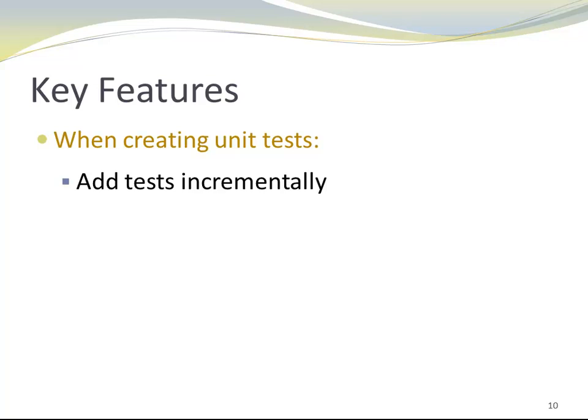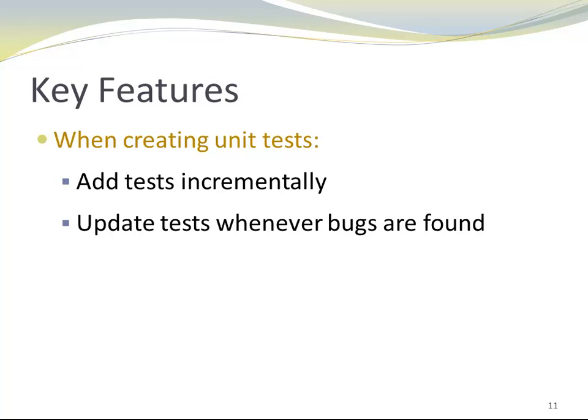Here are some key features of unit tests. When you create unit tests, you add them incrementally — you write some code, you write a test; you write more code, you write more tests. Whenever bugs are found, tests are updated. Sometimes you find a problem in the code and there's a temptation to just go in and fix the code. But it's a very good idea to fix the test first — make the test fail and then fix the code. This way you guarantee that the same problem cannot occur a second time unnoticed.